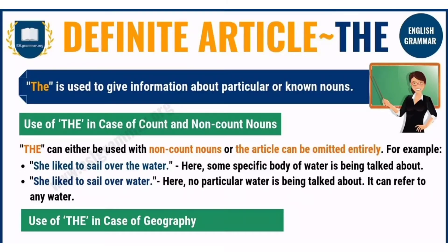Definite Article: 'the'. 'The' is used to give information about a particular person or thing in a sentence. For example: He saw the minister during the parade — a particular minister. The king of the country came to Peter's hut — a particular king.